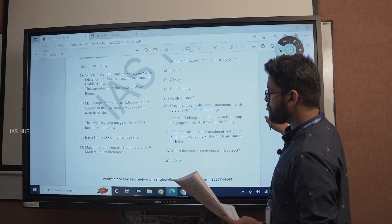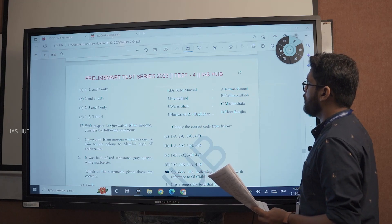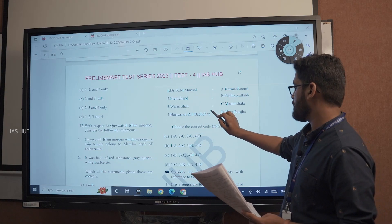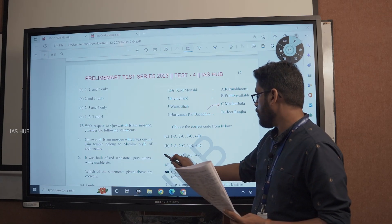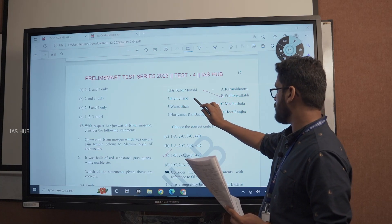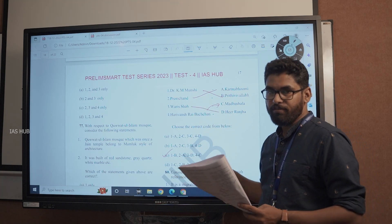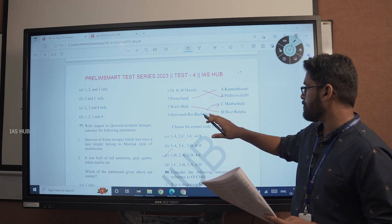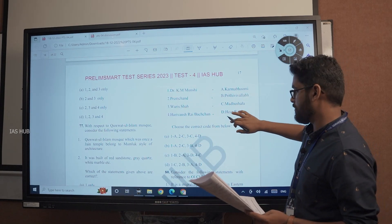Match the following pairs with reference to modern Indian literature. A bit factual question. But if you know Harivansh Rai Bachchan, father of Bachchan ji, his literature or his writing is Madhushala. There is only one option here, that is option C. Dr. K.M. Munshi wrote Prithvi Vallabh, Premchand ji wrote Karma Bhoomi, and Varis Shah wrote Heera Ranjha. A very factual question, a difficult question. But if you know at least Harivansh Rai's famous writings, Madhushala, you can get the answer.